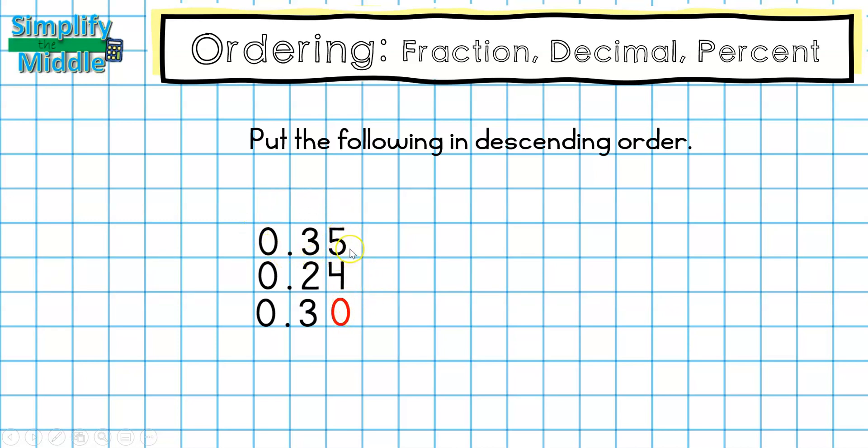So I know 35 hundredths is my largest number. Since I'm doing descending order, I want to start with my largest and go down. So I'll first write 35 hundredths and then I like to cross it out so I can remind myself I've already used it. Then we know here that our three is larger than our two, so three tenths would be our next number. And then our last number in descending order would be our 24 hundredths.